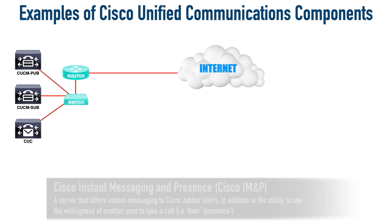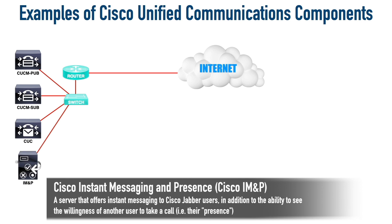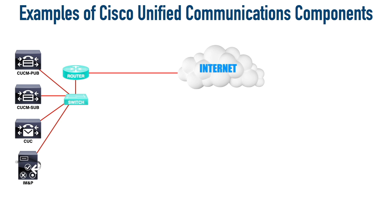Another server we might have is the Cisco Instant Messaging and Presence Server, or IMNP for short. This is going to allow us to use a software-based client on our machine — be it a laptop, a desktop, or a smartphone — called Jabber. Cisco Jabber can be used as your instant messaging client to message somebody else within your company, and you can see if they're available based on the color of the dot next to their contact information. If it's red, they might be busy; yellow or orange means away from their desk; green means available. That's presence information — the willingness of someone to accept a call right then.